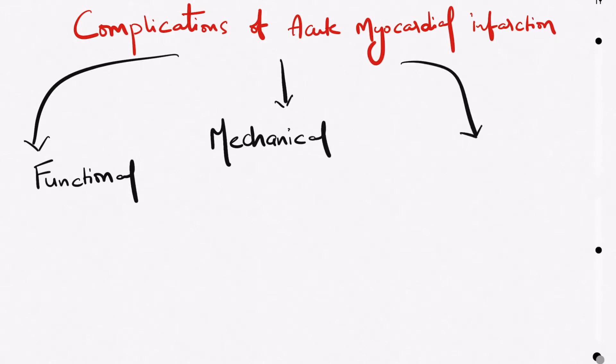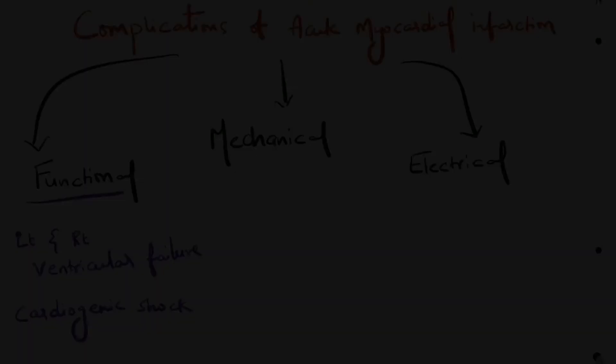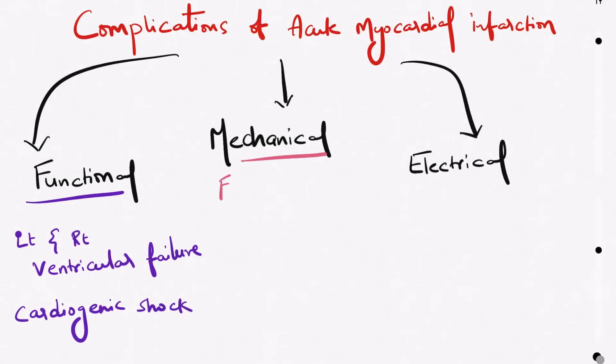and electrical complications. What are the functional complications? Acute myocardial infarction can cause left or right ventricular failure and heart failure with low output states, which will lead to cardiogenic shock.